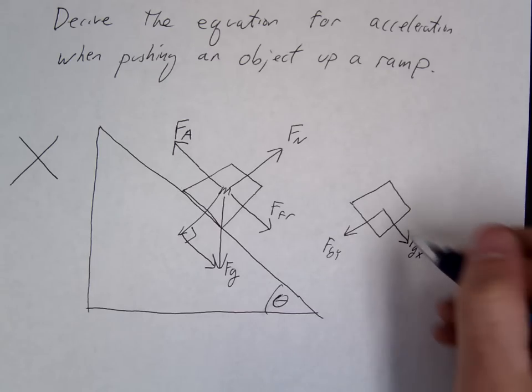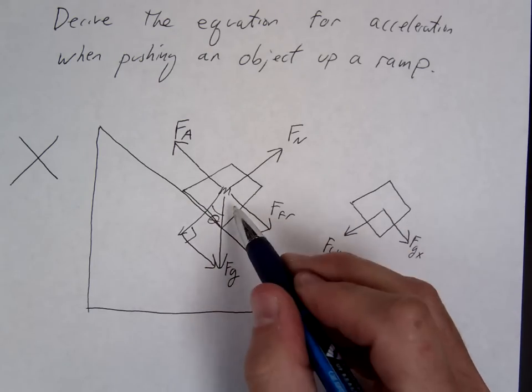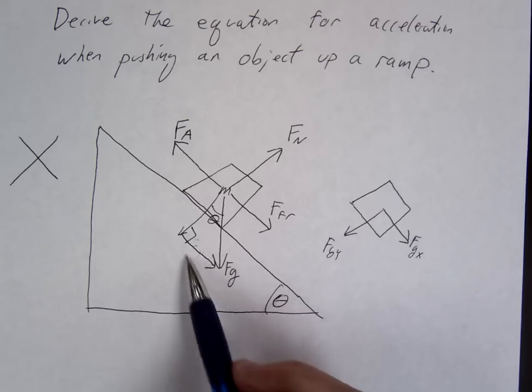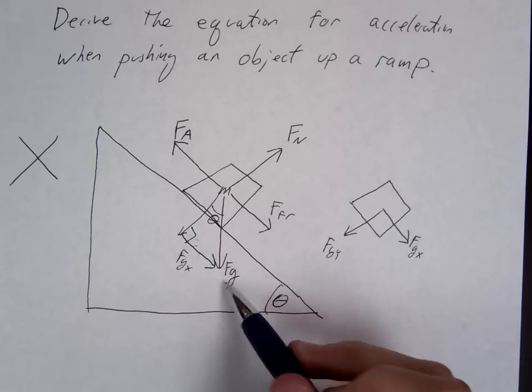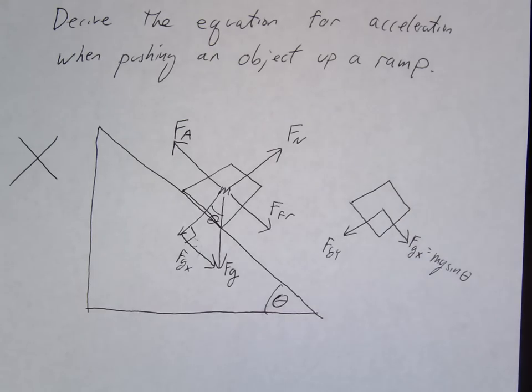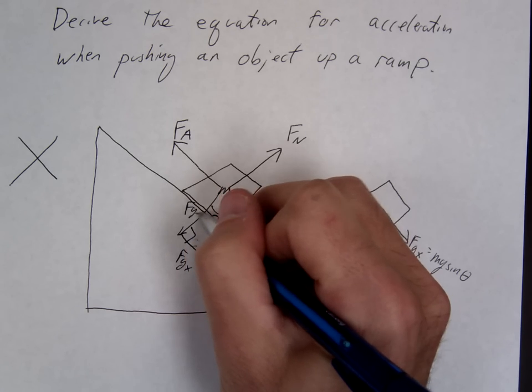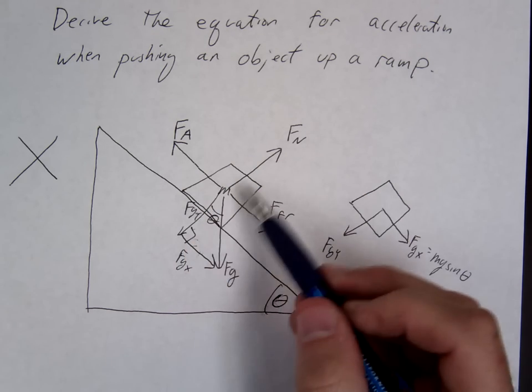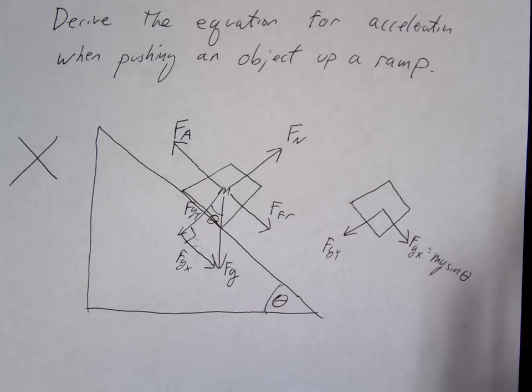And what was FGX? Here's our angle theta, right? Our FGX is right here. Are we going to use sine or cosine? Sine. So this would be MG sine. The one holding us on the ramp is right here, FGY. That's our adjacent side. Do we use sine or cosine? Cosine.